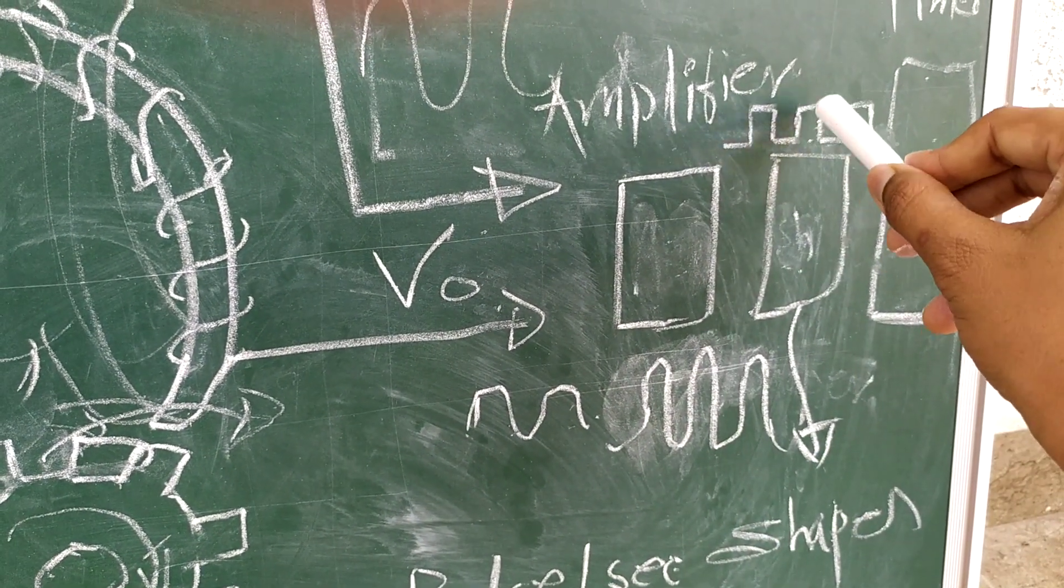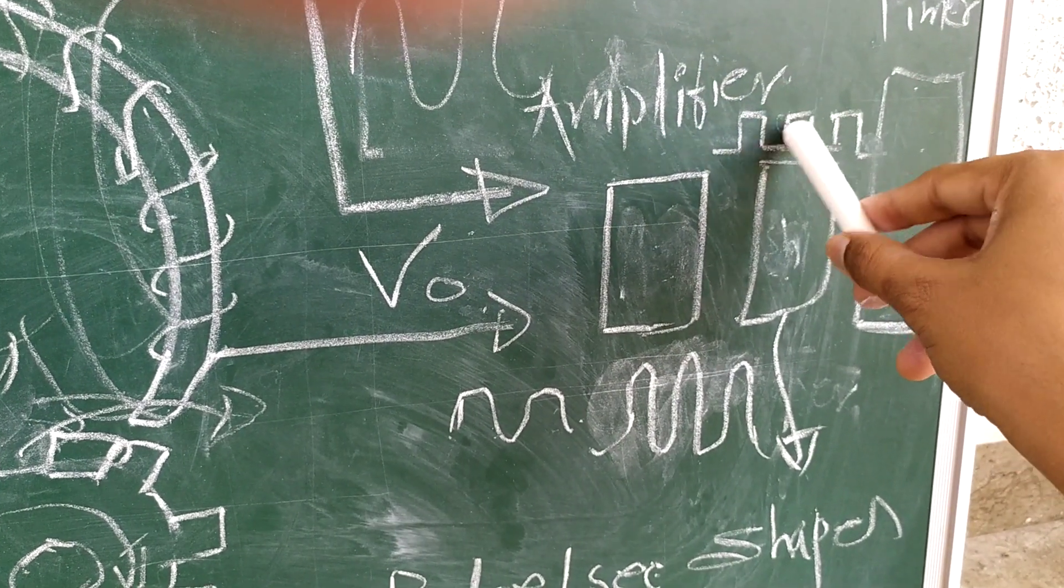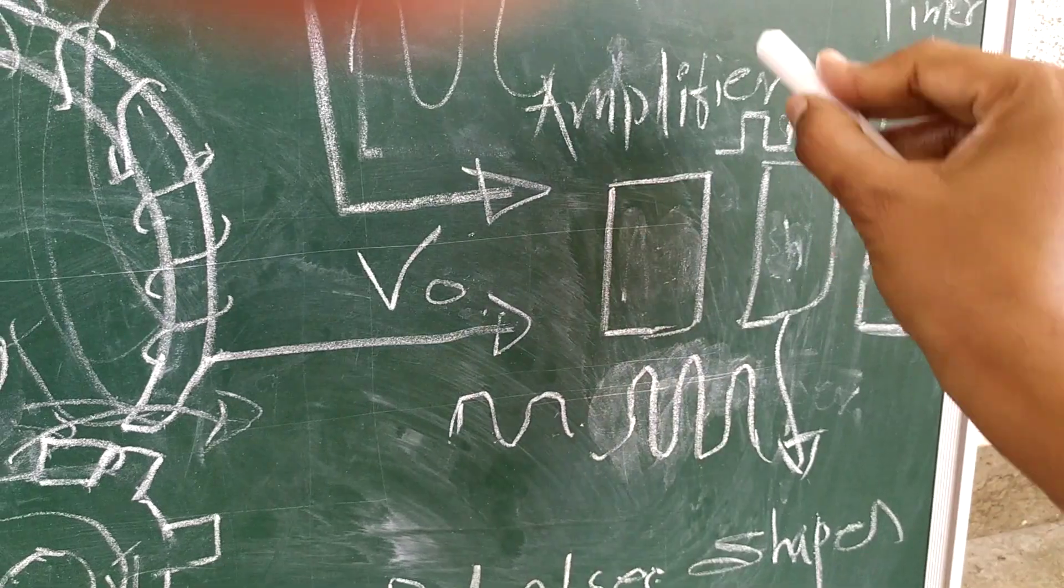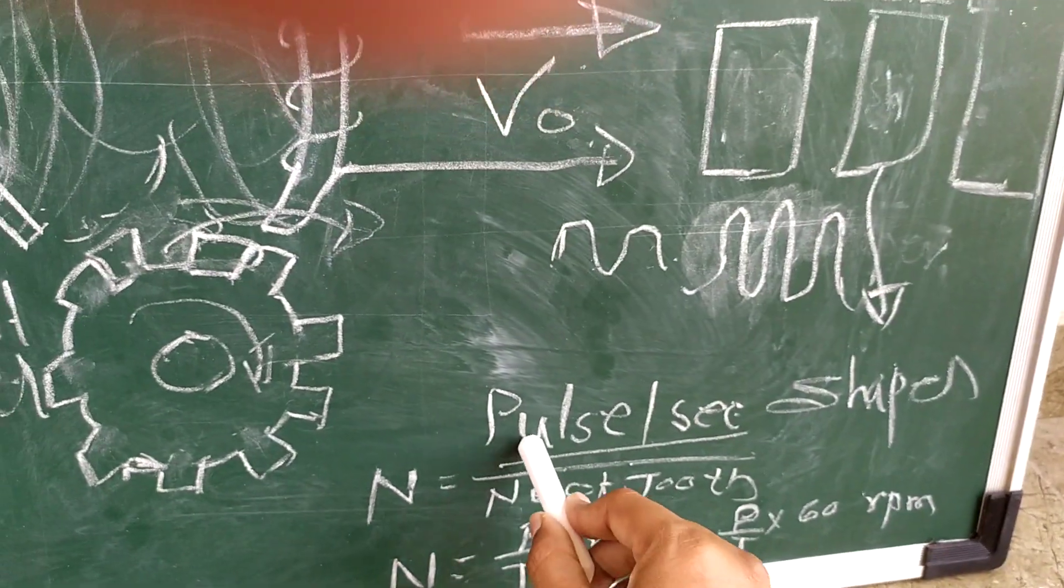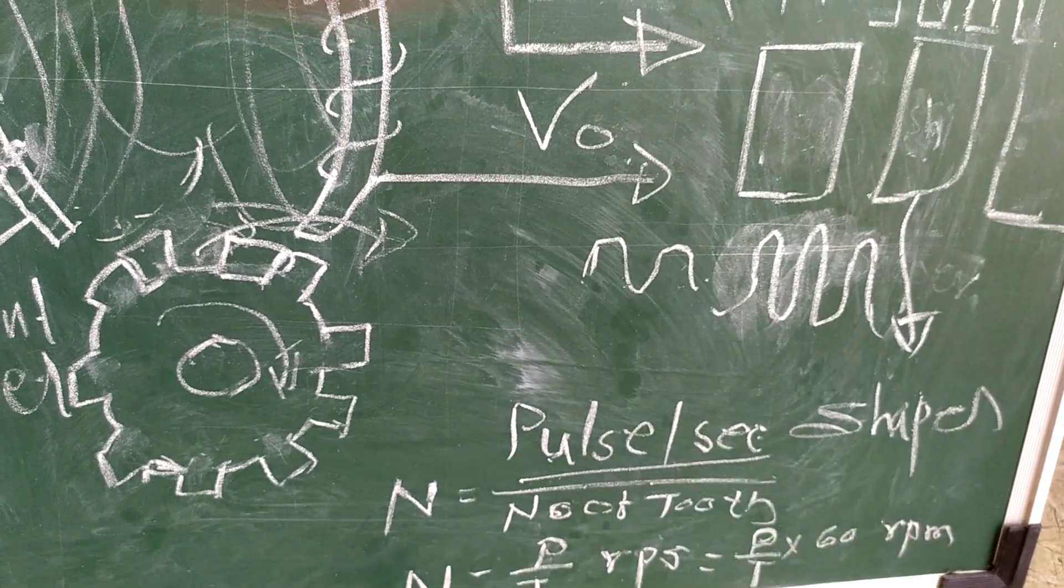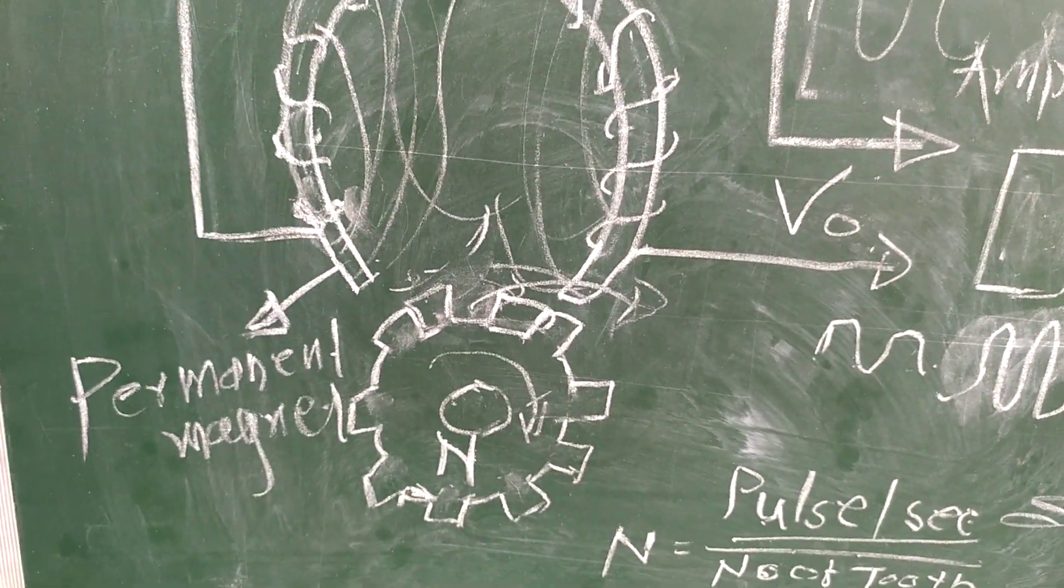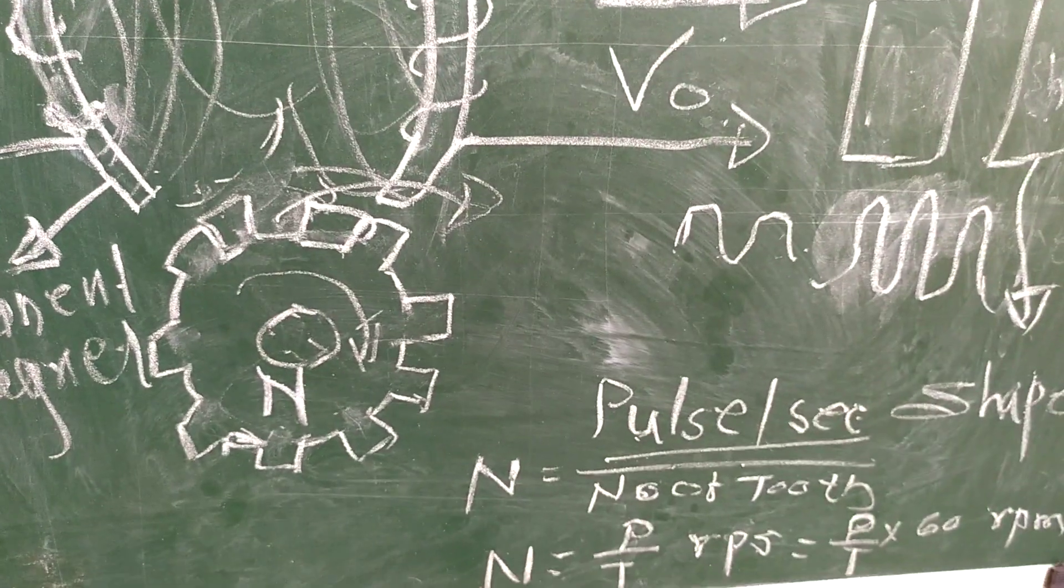This is fed to the timer, which will calculate the number of pulses per second. Now our main goal is to find out the RPM. To find the RPM, we can use this formula: pulses per second divided by number of teeth.